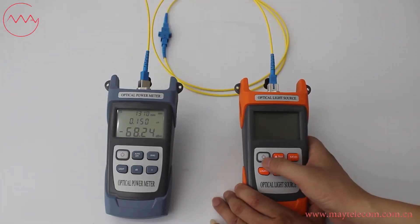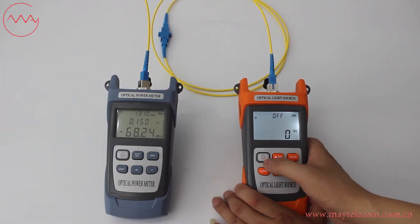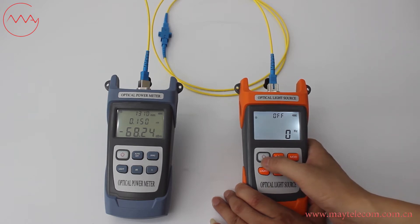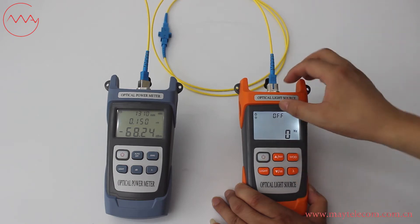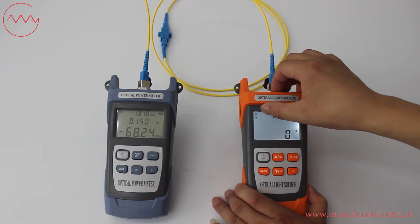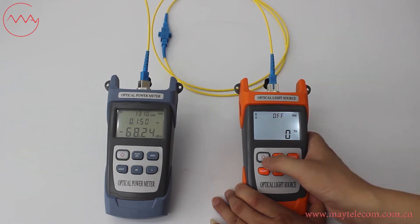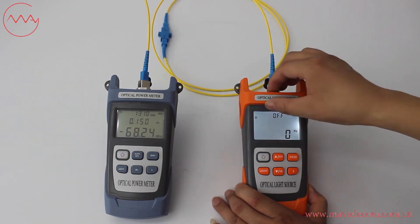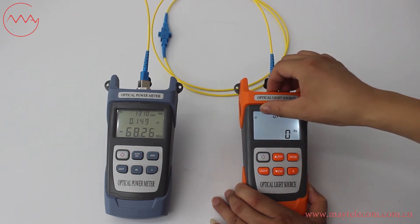Press the power button to turn on the optical light source. Press it again and it will turn on the auto-off function. Press it again and the auto-off function will be turned off.